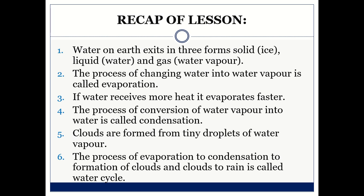Water on earth exists in three forms: solid, liquid, and gas. The process of changing water into water vapour is called evaporation. If water receives more heat, it evaporates faster. The process of conversion of water vapour into water is called condensation. Clouds are formed from tiny droplets of water vapour. The process of evaporation to condensation to formation of clouds and clouds to rain is called the water cycle.